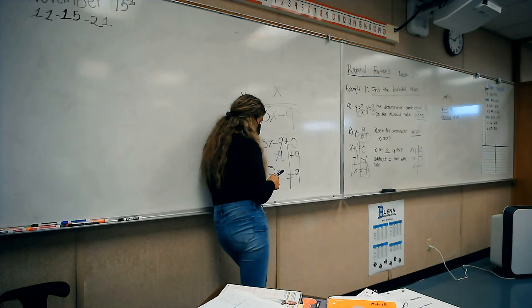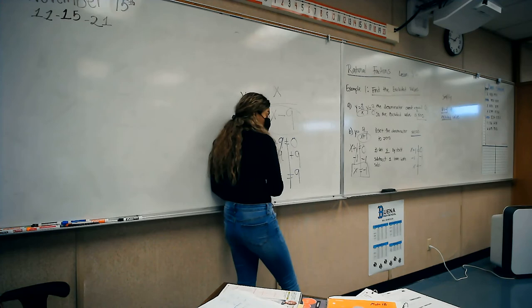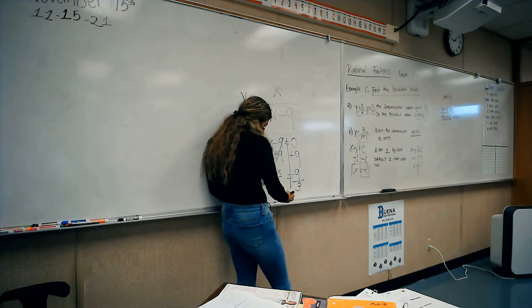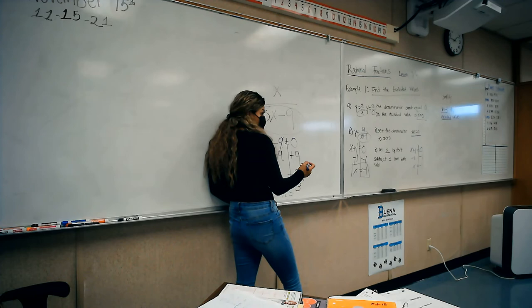But I still need to get x by itself. I have 3x, so what do I need to do to get x by itself? Divide by 3. Remember what you do to one side, you need to do to the other. These three cancel out. So I'm left with x equals 9 divided by 3. What is 9 divided by 3?